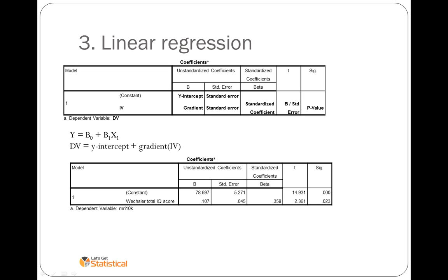Now interpreting the table at the bottom, I have shown you all the values above and where to find them. We're predominantly interested in writing an equation of a straight line that looks like DV equals y intercept plus gradient times IV. We pull out those four different pieces of information from our table and construct a sentence: MRI10K equals 78.897 plus 0.107 times IQ.